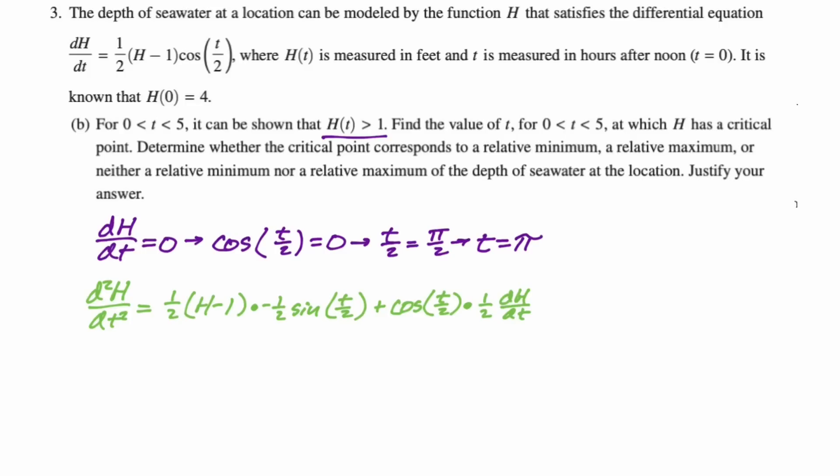And now what we need to do is figure out if this thing is positive or if it's negative. I'm expecting this to work out to be negative because I think we're getting a relative maximum. But there's a bunch of stuff that we know. We know that h is greater than one. We know that the sine of pi over two is one. And we also know that at t equals pi, dh/dt is zero because it's a critical point. So the second part of this just drops out.